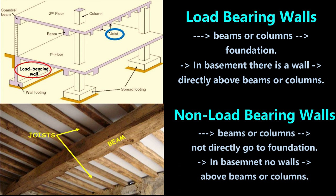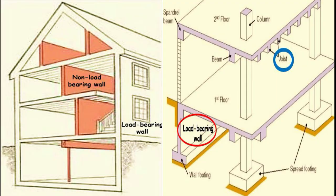Check if you find beams or columns in the basement and there is a wall directly above these structures — there is a chance that the wall on the floor above is a load-bearing wall. Similarly, walls directly beneath beams and columns on the floor below are more than likely load-bearing walls. Non-load-bearing walls may be constructed in the absence of beams and columns. These are a few checks to find whether a wall is load-bearing or not.